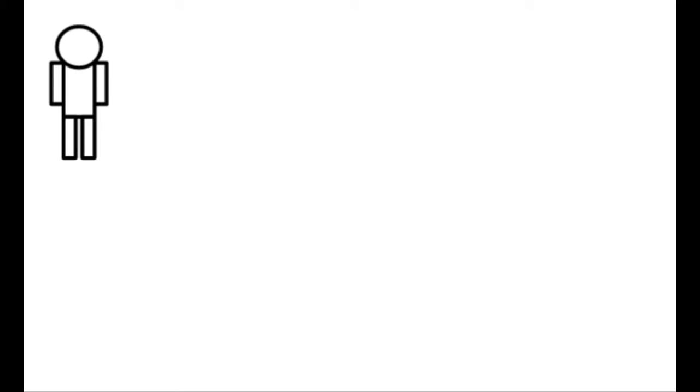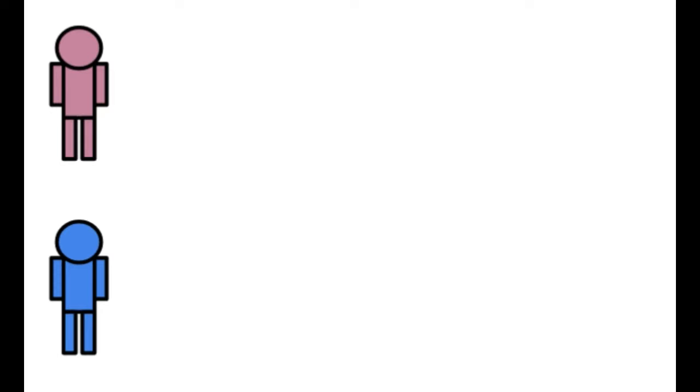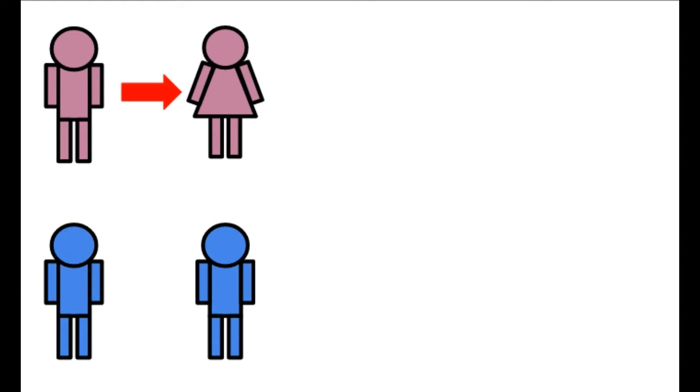For this new example we will be using a man. This man classifies as a woman and is attracted to men. This is shown with the pink man on top being the man we are looking at and the blue man on bottom being who the top one is attracted to. The top man gets a sex change. So now he is a she that can classify as a woman. She is still attracted to men.